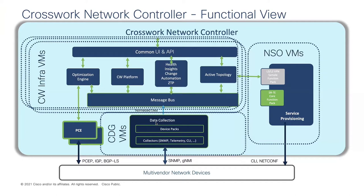We're now switching more and more to gNMI, a vendor-dependent protocol for getting streaming telemetry from routing devices, with OpenConfig models serving as the equivalent of MIB files. We already have gNMI capability in the 3.0 shipping product. SR-PCE is the key component for path control — when you create an SR-TE policy with intent, a PCEP request is sent to the PCE, which performs path calculation based on the topology learned from different routing domains.